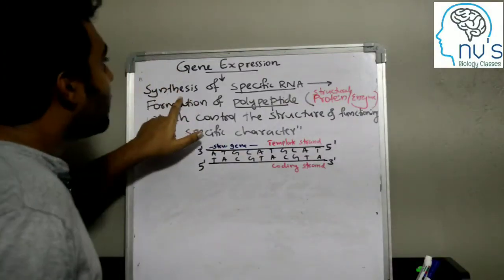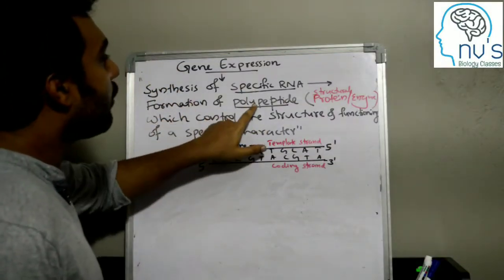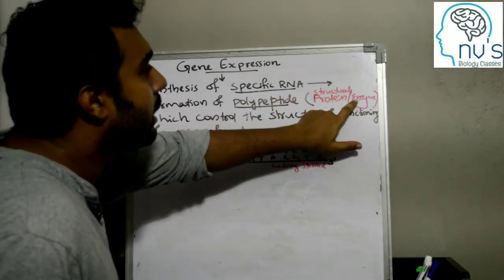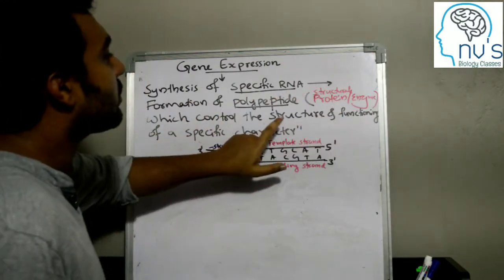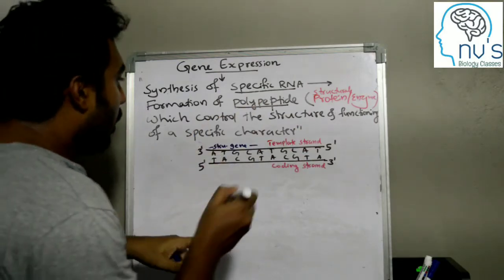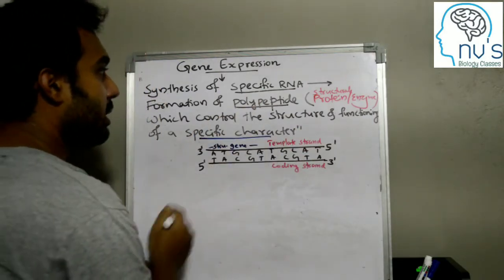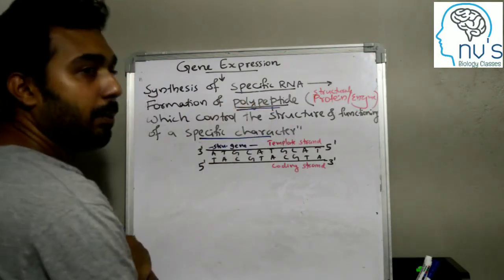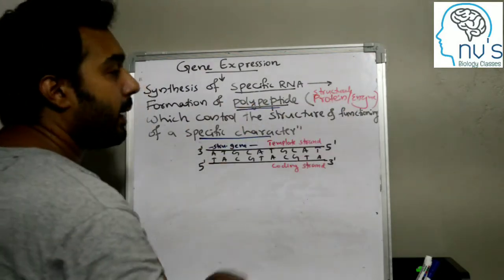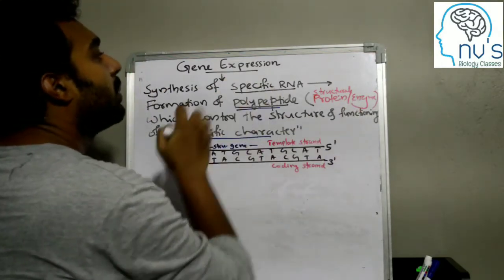Gene expression is the synthesis of specific RNA and formation of polypeptide — only structural protein and enzyme — which control the structure and functioning of a specific character. A gene produces a polypeptide. Polypeptide is one of the structural proteins that has a specific RNA.